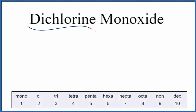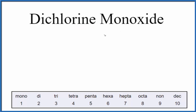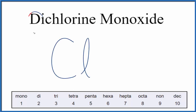To write the formula for dichlorine monoxide, we first need to realize we have the prefixes 'di' and 'mono,' which tells us we have a molecular compound. To write the formula, we'll use the prefixes. Let's write chlorine — that's Cl — and 'di' means two, so we're going to have two chlorine atoms.